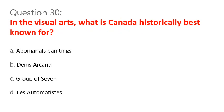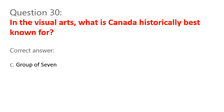Question 30. In the visual arts, what is Canada historically best known for? A. Aboriginal paintings. B. Dennis Arcand. C. Group of Seven. D. Les Automatistes. Correct answer: C. Group of Seven.